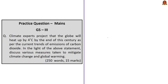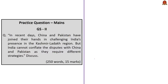Today we have two mains questions. The first: Climate experts project that the globe will heat up by 4 degrees Celsius by the end of this century as per current CO2 emission trends — discuss various measures taken to mitigate climate change and global warming. The second: In recent days China and Pakistan have joined hands in challenging India's presence in the Kashmir-Ladakh region, but India cannot conflate the disputes with China and Pakistan as they require different strategies — discuss. Both are 15-mark questions to be answered in 250 words.